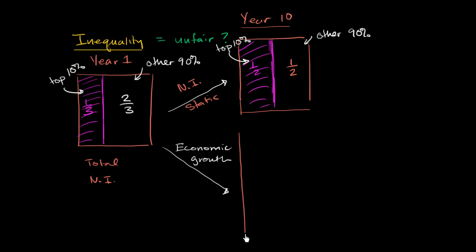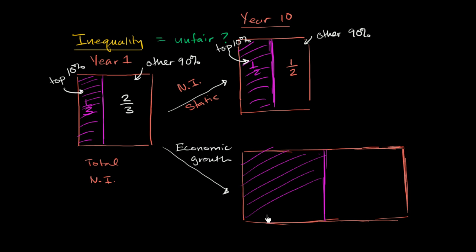Let's say your pie has grown dramatically over 10 years. Maybe I'm exaggerating a little bit for the sake of discussion. I'll try to draw it at the same height. But now, our whole economy has doubled. And now in this situation, let's say you still have this wealth inequality growing. So the top 10% in year one, having one-third of national income, still grows to one-half of national income in year 10. So one-half of national income right over there.